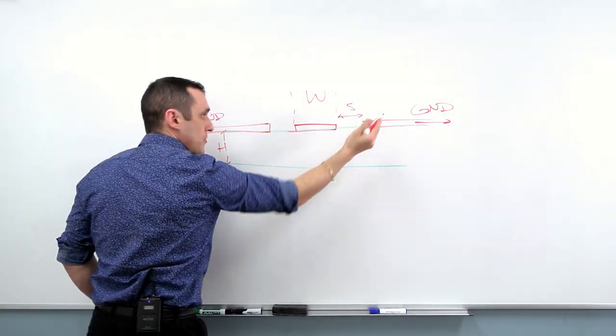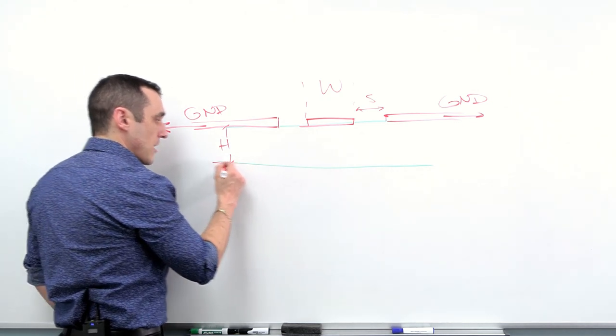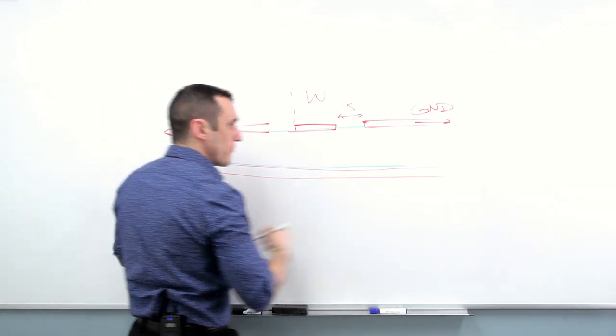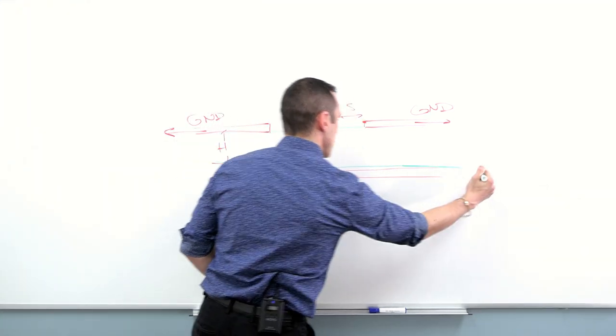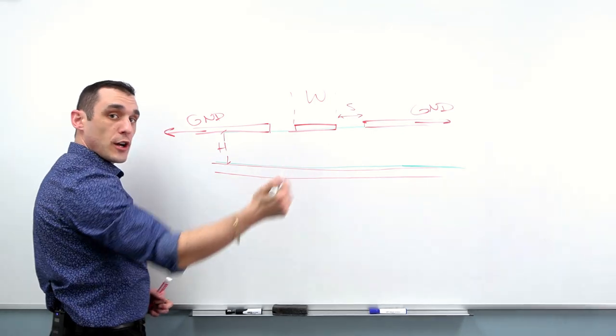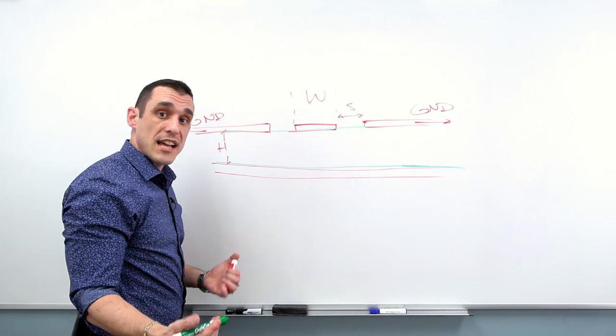The next kind of coplanar waveguide puts a ground plane down here. You can calculate the impedance of this trace once you bring in this ground plane, just following the method that we actually showed in another video on coplanar waveguides without ground.